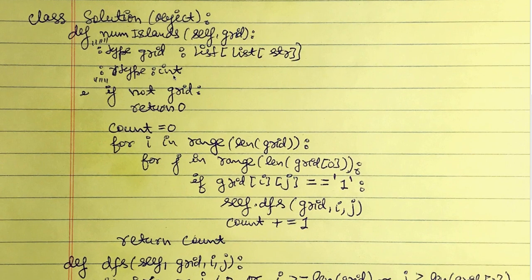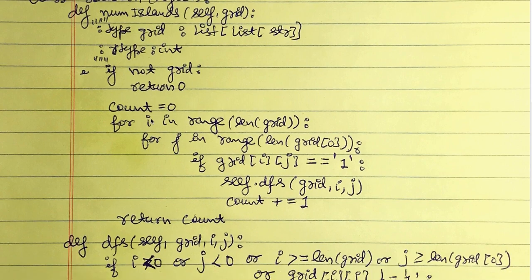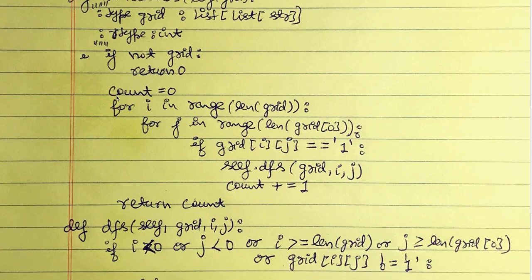As the question describes, we have a grid which is a 2D list of strings, and the return value is an integer — the number of islands. First we handle the edge case: if the grid is empty we return zero. If it is not empty, we initialize count to zero, then travel with a loop for i in range of the number of rows, and for j in range of the number of columns.